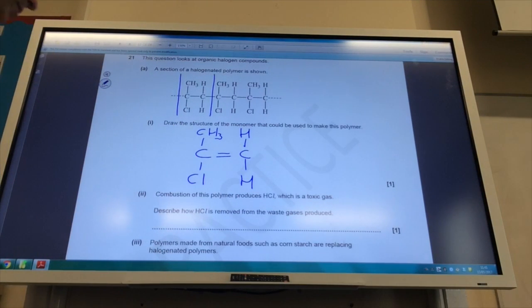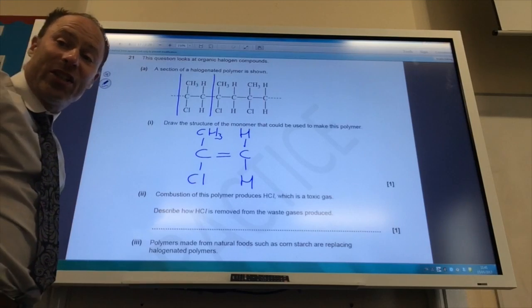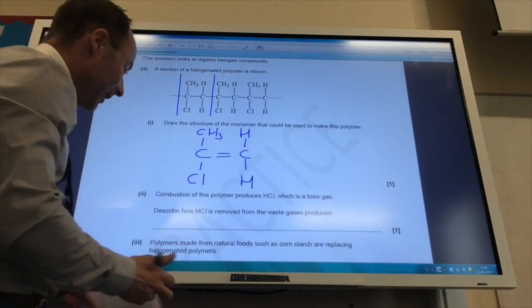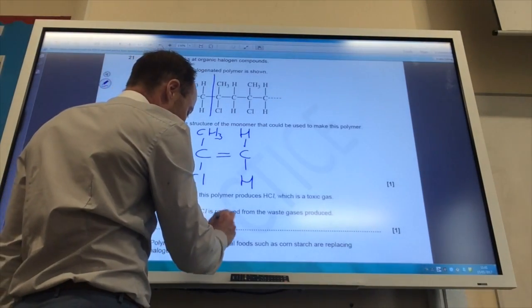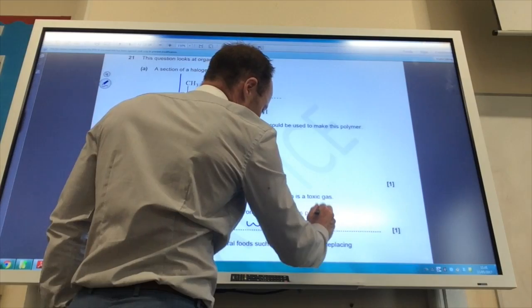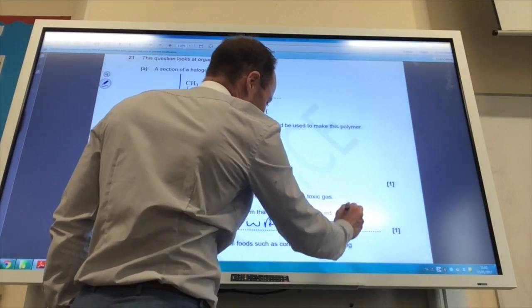Describe how HCl is removed from the waste gases. Well, HCl is of course an acidic gas, so you remove it by reacting with an alkali. That would remove the acidic HCl.